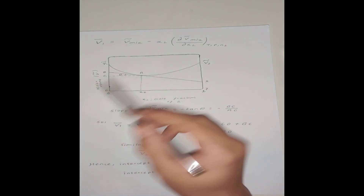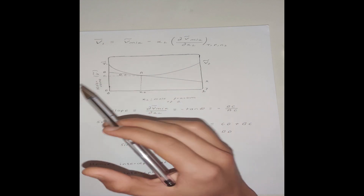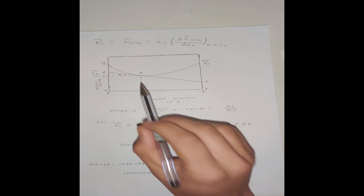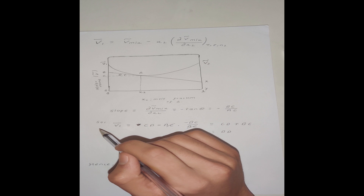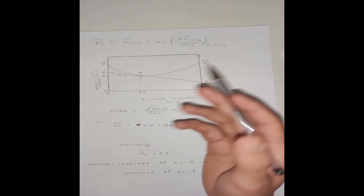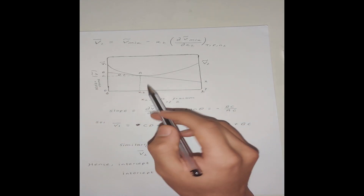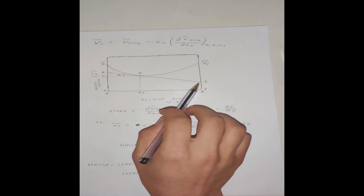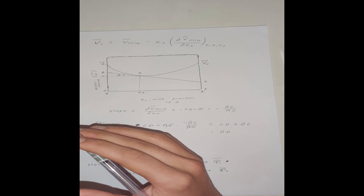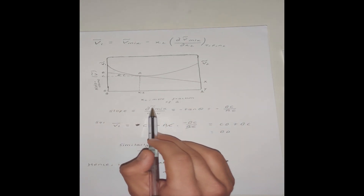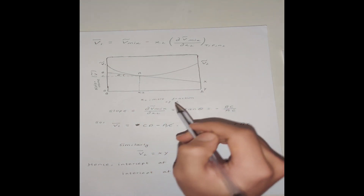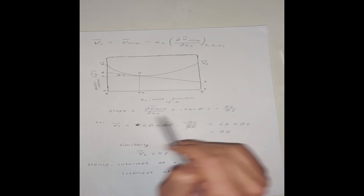Now comes the interesting part. We suppose that the molar volume of the mixture varies with the mole fraction of component 2. To determine the partial molar volume we draw a tangent to the curve at a desired mole fraction x₂. I want to find the partial molar volumes of components 1 and 2 at mole fraction x₂. The slope of this tangent is the partial derivative of the molar volume with respect to x₂, which equals −tan(θ) — the minus sign appears because the tangent is decreasing and slope is rise over run, giving −BC/AC.